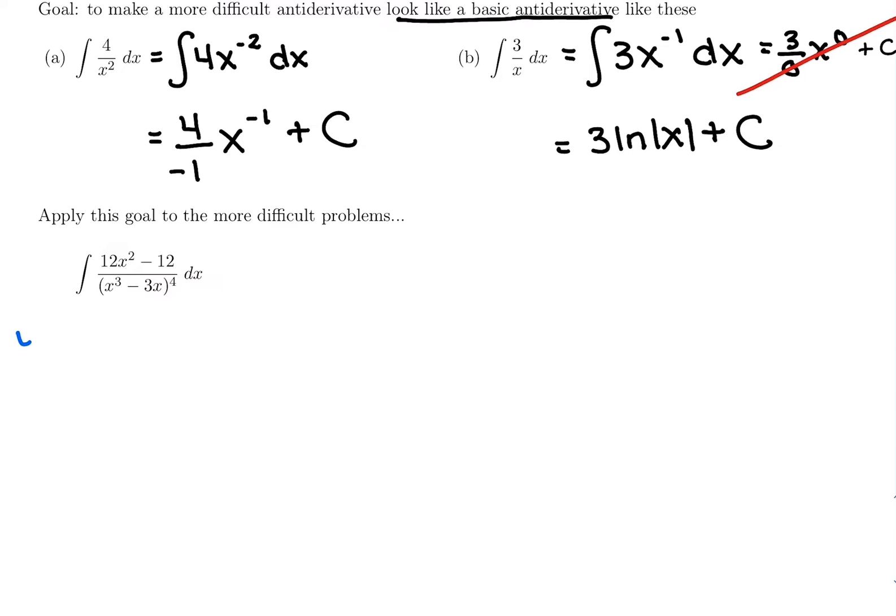So starting this problem, we want to pick u to be whatever is in the denominator, because even if the power is not written in the denominator, we know it's to a negative power. Just like this 3 over x had 3x to the negative 1. If it was 3 over something that we want to make u, it would be 3u to the negative 1.